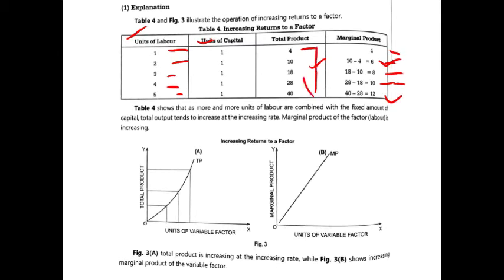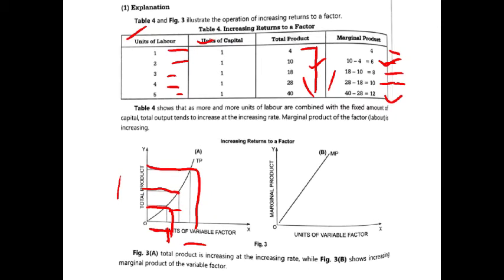In this diagram we see total product on the vertical axis and units of variable factor on the horizontal axis. When one labor is applied, total product increases. As more units of the variable factor are added, total product increases again and again. So as the quantity of the variable factor increases with the fixed factor, total output increases — this is increasing return to a factor. The marginal product also increases.